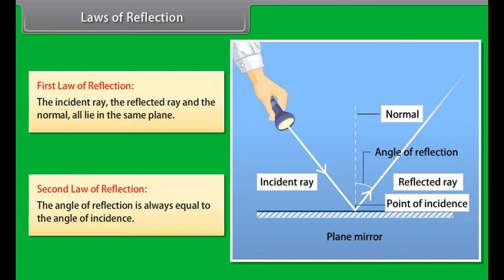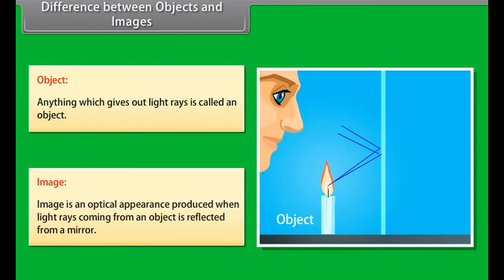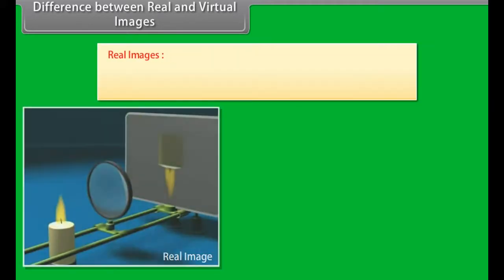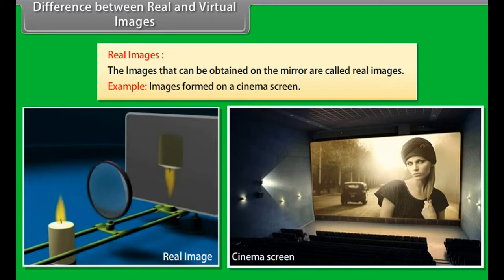Uses of plane mirror: They are used to see ourselves. They are fixed on the inside wall of certain shops like jewelers shop to make them look bigger. Plane mirrors are used in making periscopes. They are used at blind turns of busy roads to prevent accidents. Plane mirrors are used as looking glass. They are used in solar cookers. They are used to make kaleidoscope, a toy which produces beautiful patterns from colored paper, pieces of glass, or small colored beads.